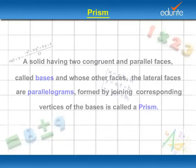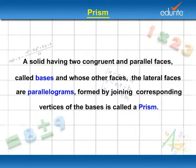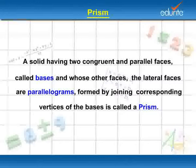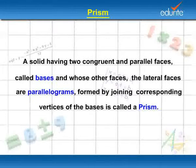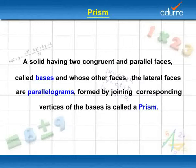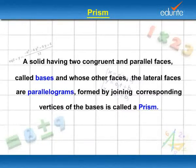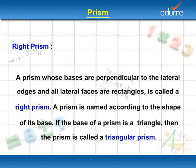Prism: a solid having two congruent and parallel faces called bases, and whose other faces — the lateral faces — are parallelograms formed by joining corresponding vertices of the bases. This is called a prism.